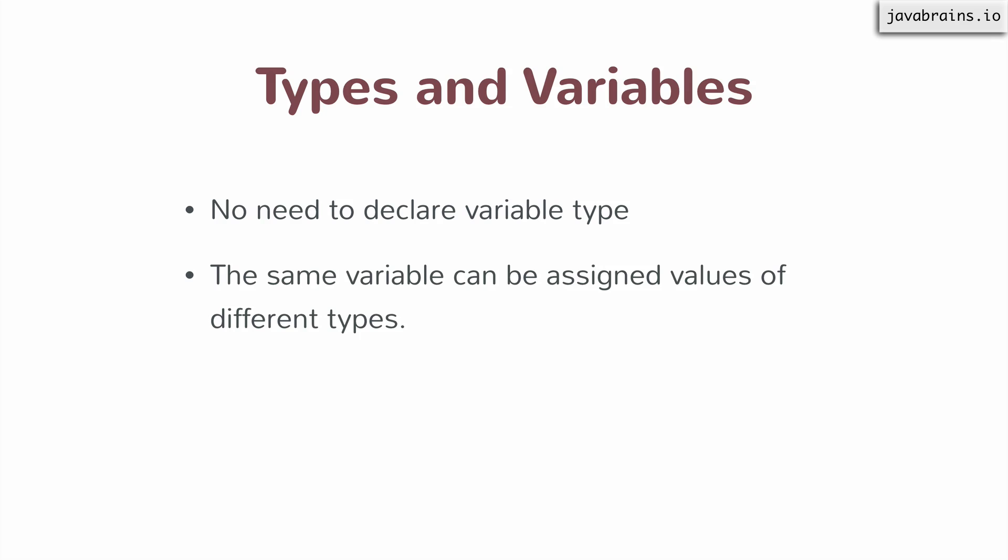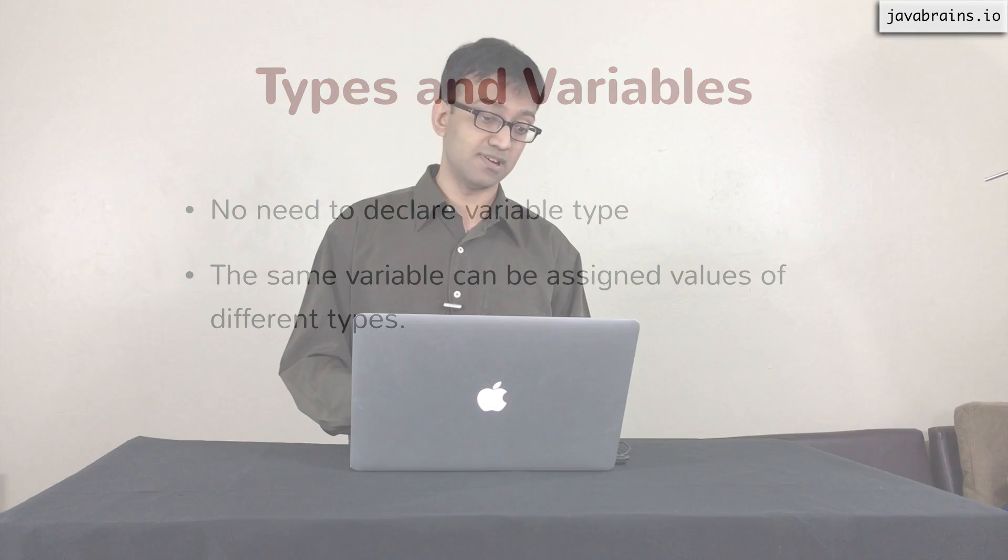The same variable can be assigned values of different types. And we saw that. You could take a string and assign it to a variable which was formerly holding a number, or take undefined and assign it to a variable that was holding a Boolean, for instance.